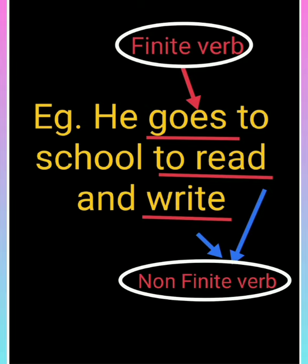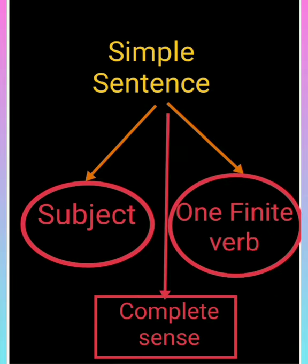Toh is poore vakya mein kul milakar teen verb the, lekin finite verb sirf ek hai. Aise sentence ko hum simple sentence kehte hain — jis vakya mein ek karta ho aur us karta ke saath ek hi finite verb ho jo person, number ya tense ke saath apne aap ko parivartit kare. Non-finite verbs usme 2, 3, 4, 5 jitne marzi ho sakte hain. Yeh hai simple sentence ki paribhasha. Isko pehchaniye: ek subject aur ek finite verb — toh woh saral vakya hai.